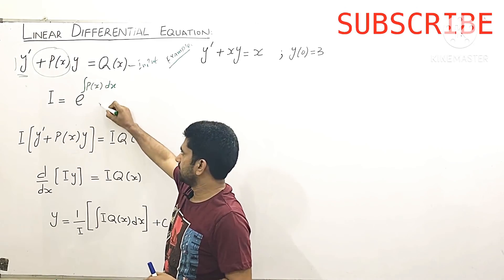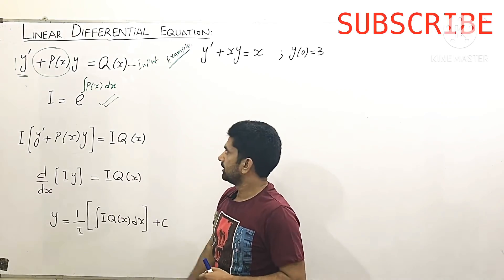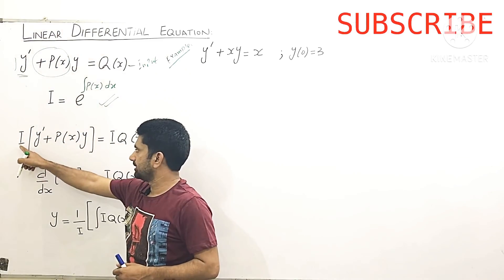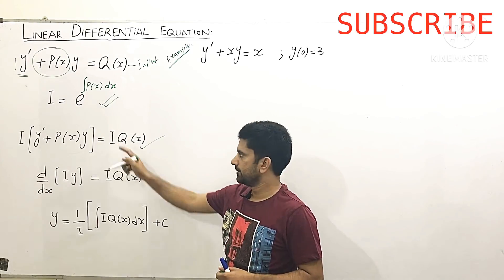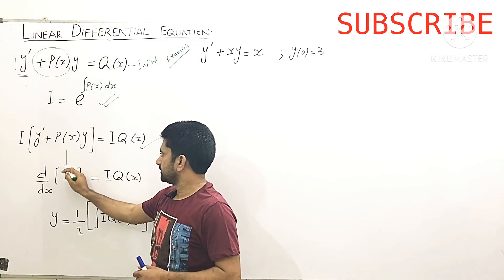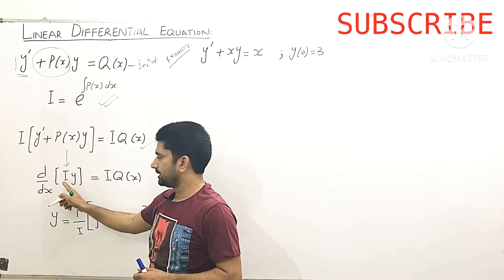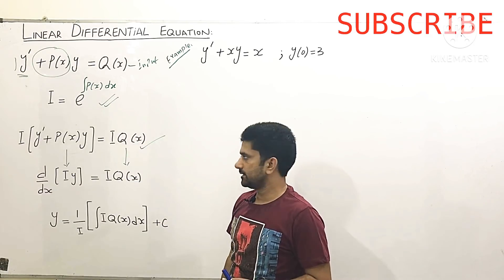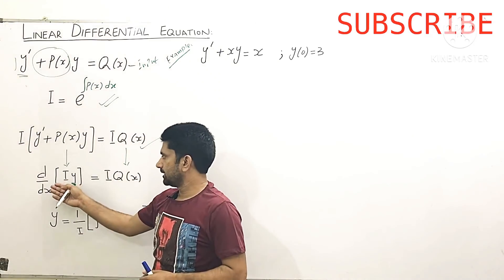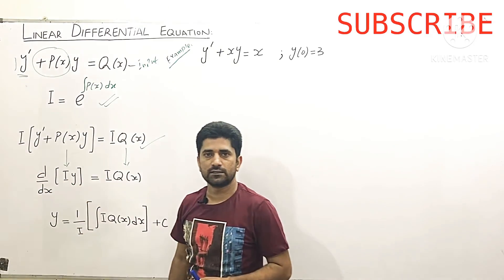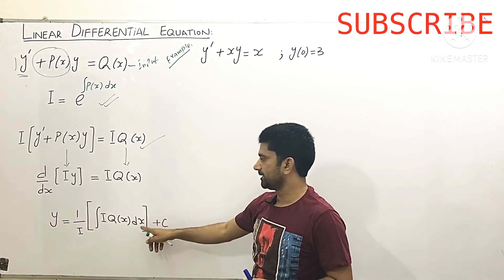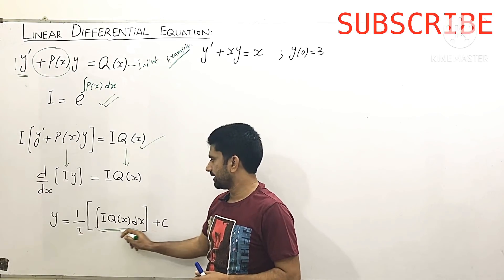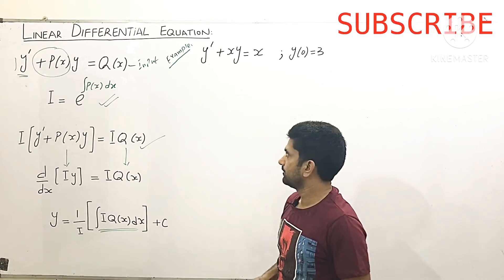The integrating factor is expressed as I = e^(∫P(x)dx). We find the integrating factor by this method, then we multiply the equation by the integrating factor. On the left-hand side we get a form that can be written as d/dx[I·y], and on the right-hand side it remains as is. We then take the integral on both sides; the d and integral cancel on the left, and we find our general solution.